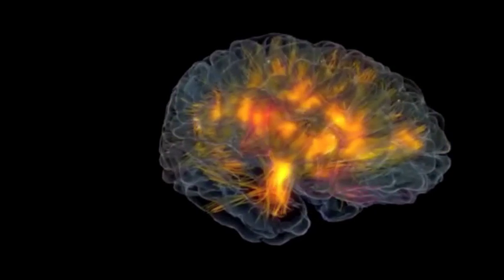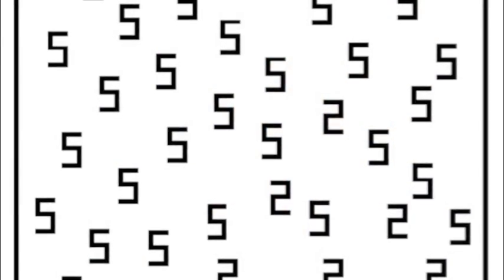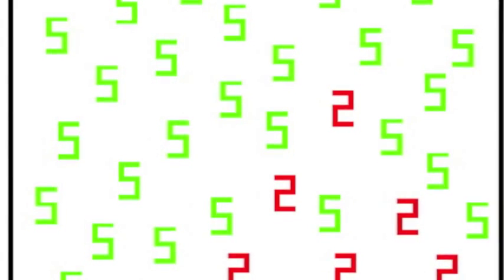Scientists have tested claims of synesthesia by using displays of black and white numbers. Hidden amongst these are other numbers in a pattern that look very similar. For example, these fives have a triangle of twos in the bottom right corner. If the two numbers really do induce different colors of synesthetes, then they should be quicker at spotting this pattern, and this is indeed the case.